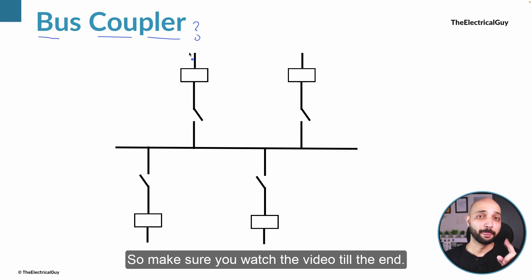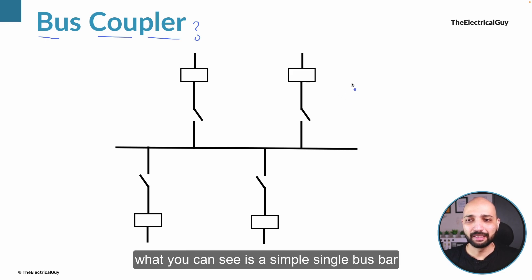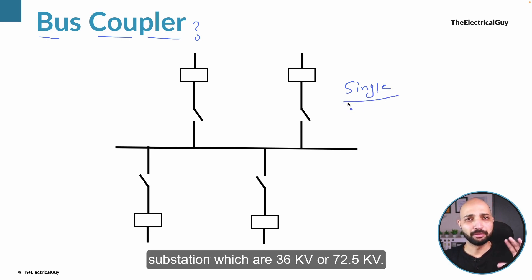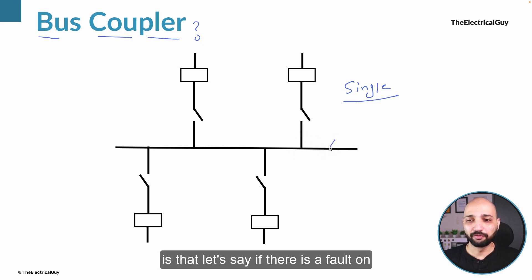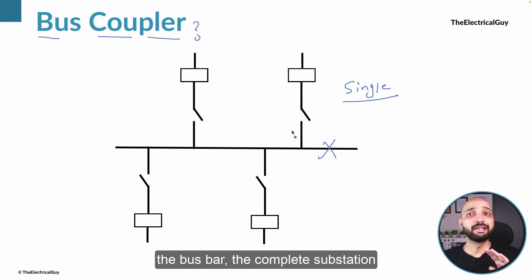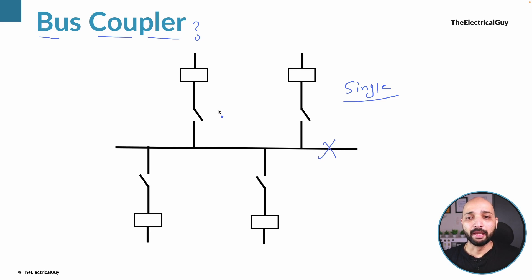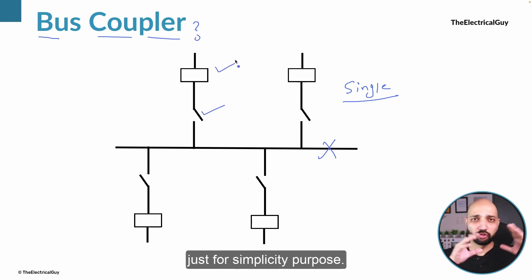So on the screen right now what you can see is a simple single bus bar arrangement that is generally used in substations which are 36 kV or 72.5 kV. Now the problem with this type of arrangement is that if there is a fault on the bus bar, the complete substation is going to face that impact — the complete substation is going to go off. Here I have only shown a disconnector and circuit breaker just for simplicity.